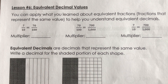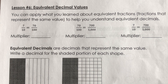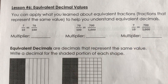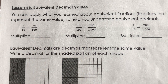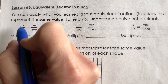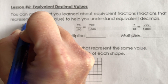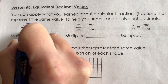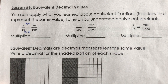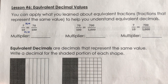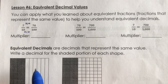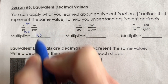Okay, you can apply what you learned about equivalent fractions — fractions that represent the same value — to help you understand equivalent decimals. So kind of a blast from the past right here. 7 tenths is equal to 70 hundredths because I can multiply 7 by 10 to get 70, and 10 times 10 is 100. So if I can multiply the top and bottom by the same digit, I get an equivalent fraction. The multiplier here is 10.